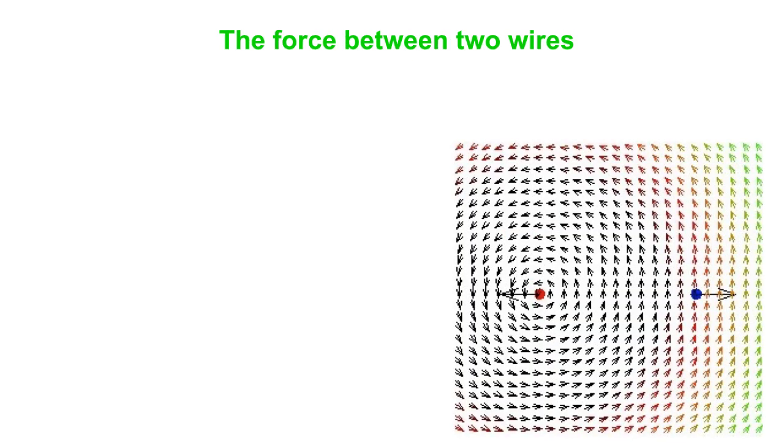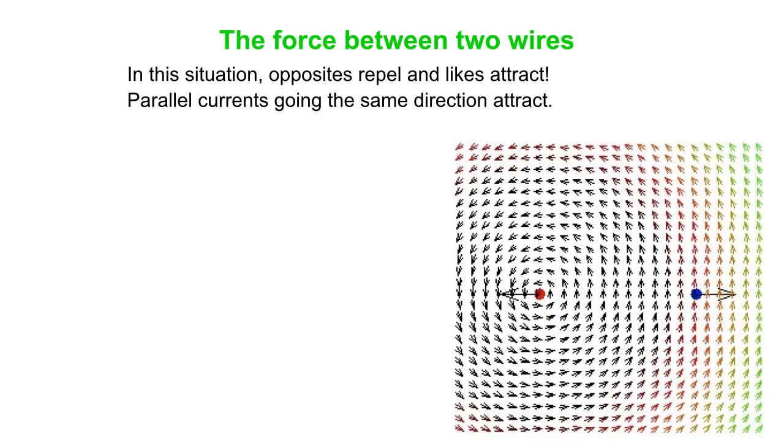Just like two charges can exert forces on one another, two wires can exert forces on one another too. But in this case, opposites repel and likes attract. In other words, parallel currents going the same direction attract. In this picture we have the red wire, that's red indicating out of the screen current direction, and the blue wire carrying current into the screen. The field here is produced by the left-hand wire, so you can see that counterclockwise circulating field from that first wire.